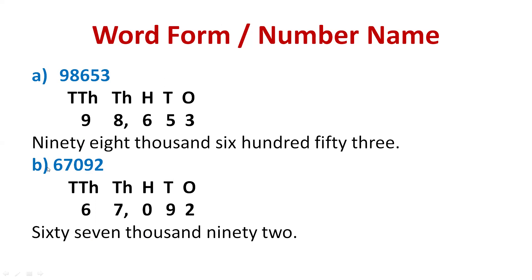Now let's do part B. The number is 6, 7, 0, 9, 2. First write the places above the numbers starting from the right side: above two — ones; above nine — tens; above zero — hundreds; above seven — thousands; above six — ten thousands. Put the comma after three digits. The number is: sixty-seven thousand ninety-two. There is no hundreds because under hundreds it's zero, so we do not write hundred. It's just sixty-seven thousand ninety-two.